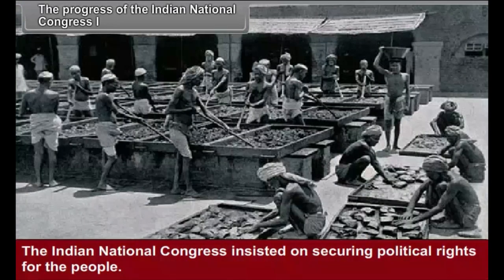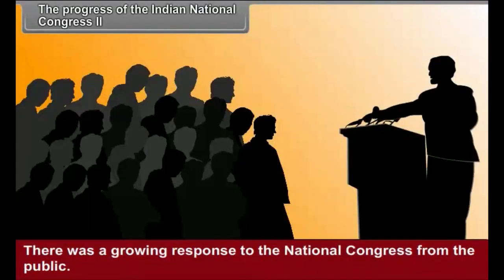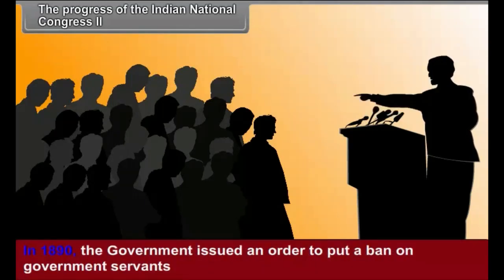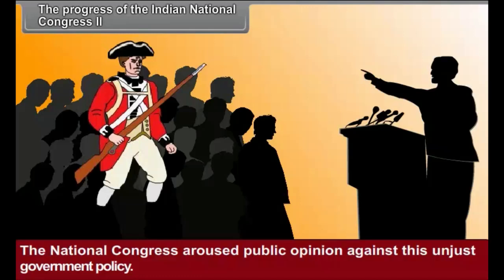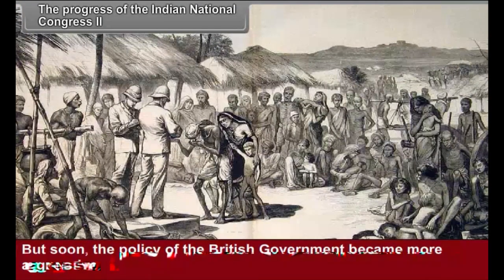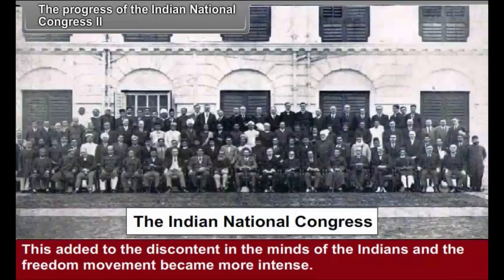Dadabhai Naoroji brought India's problems to the notice of the public in England. There was a growing response to the National Congress from the public. In 1890, the government issued an order to put a ban on government servants attending the sessions of the National Congress. The National Congress aroused public opinion against this unjust policy, which forced the British government to withdraw the order. But soon the policy of the British government became more aggressive. With a view to creating discord among the Indian people, the British adopted the policy of divide and rule. This added to the discontent in the minds of the Indians and the freedom movement became more intense.